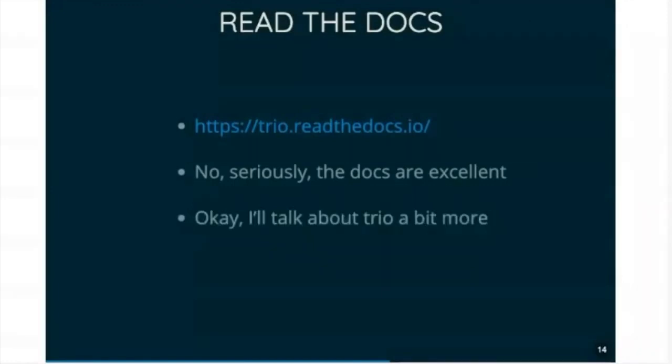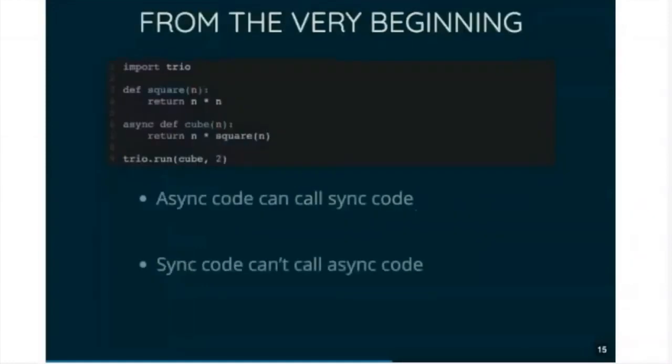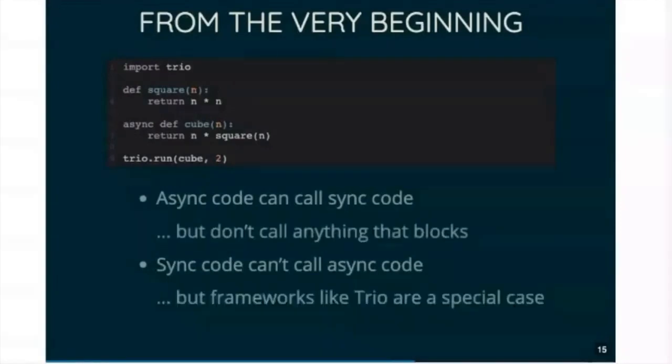So brief intro to async programming. You've got async code that can call sync code, but don't call anything that blocks. And sync code can't call async code. Sync and async sound way too similar when I'm saying them. But anyway, synchronous code can't call async code unless you're writing a framework like TRIO or asyncIO, and then there's some special mechanisms to make that work.